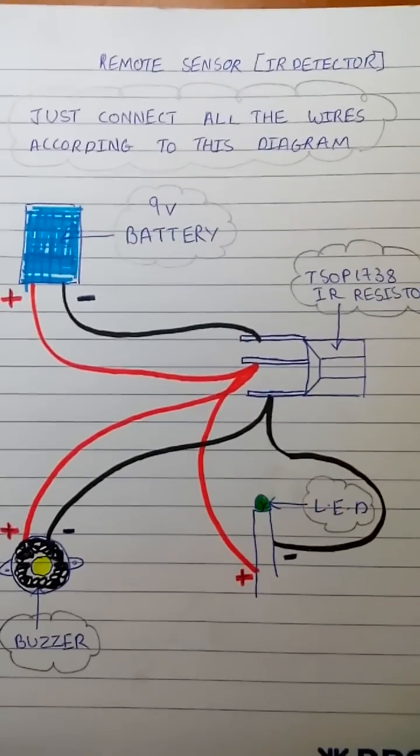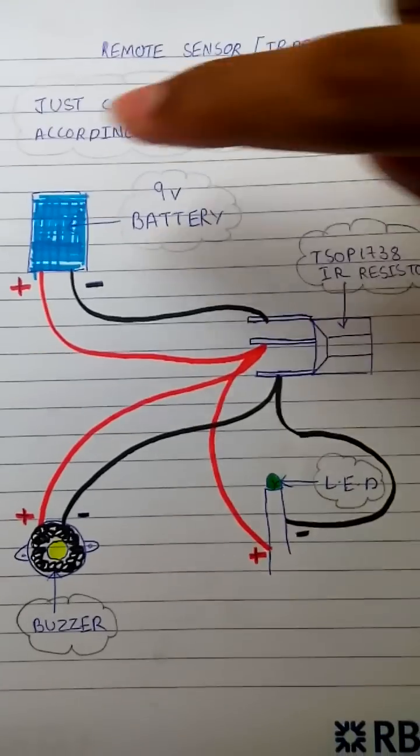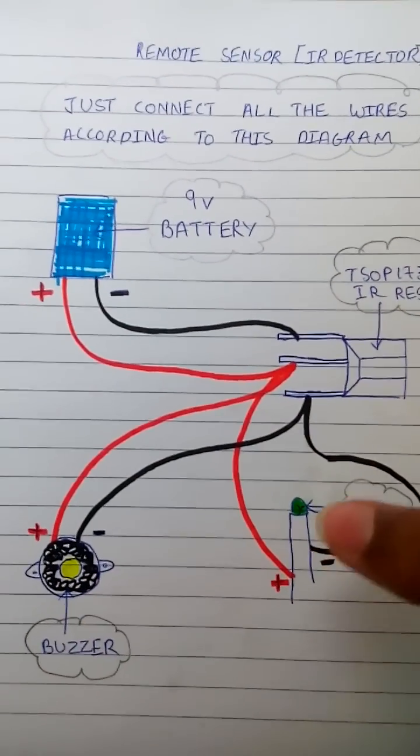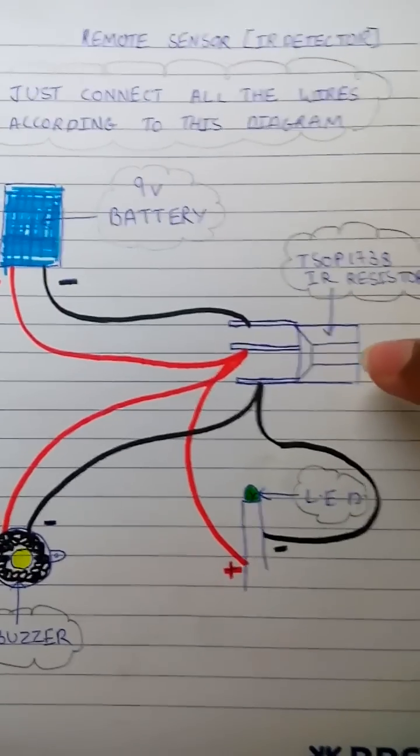See, this is a small diagram which I have made. This is a battery, this is a buzzer, this is an LED and this is the TSOP1738 IR resistor.